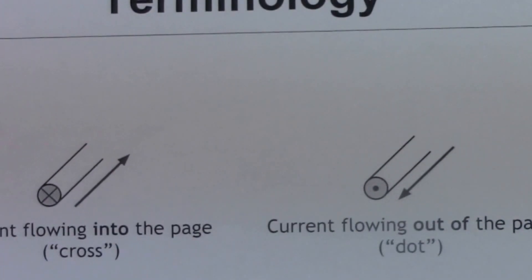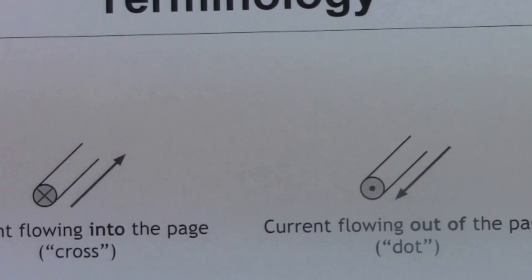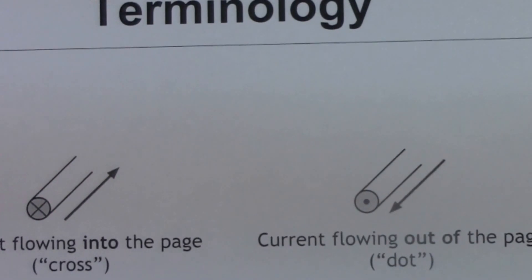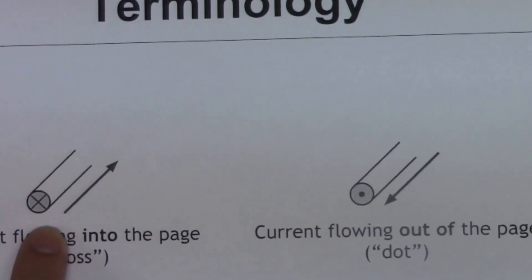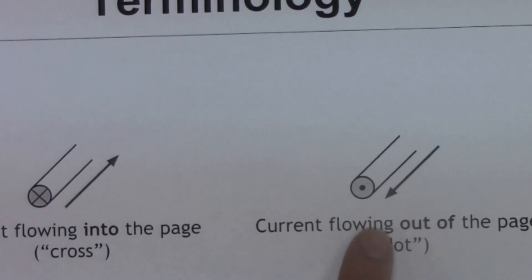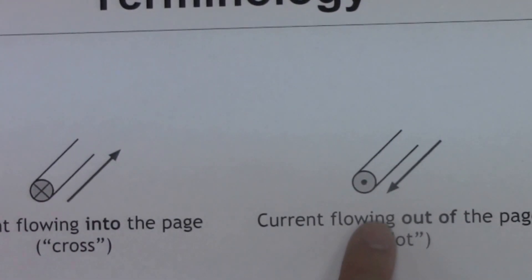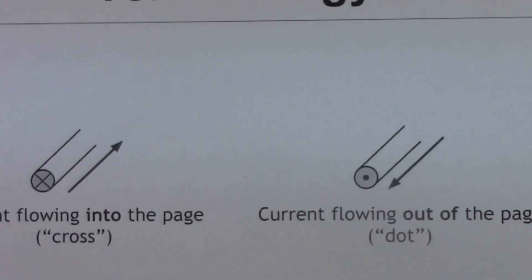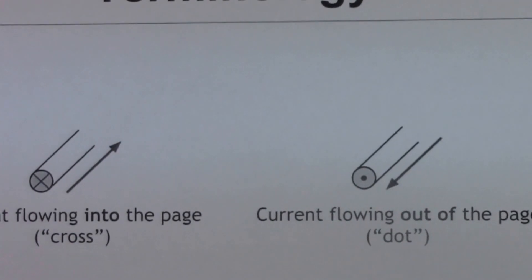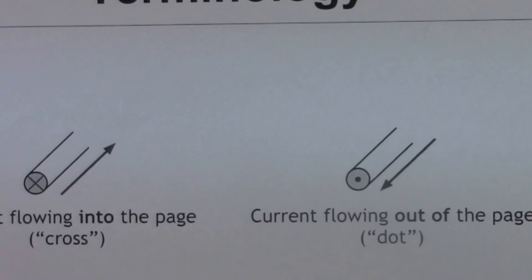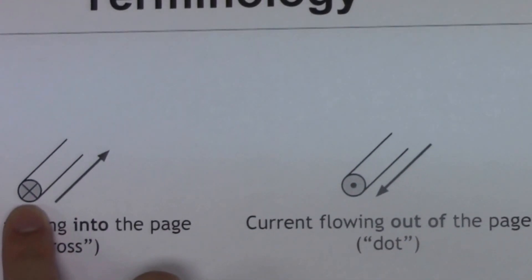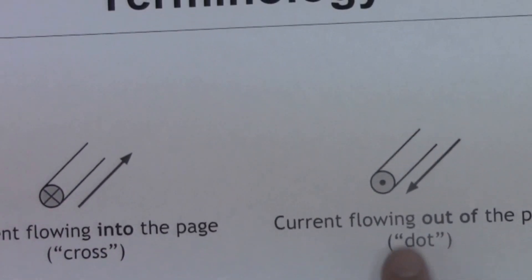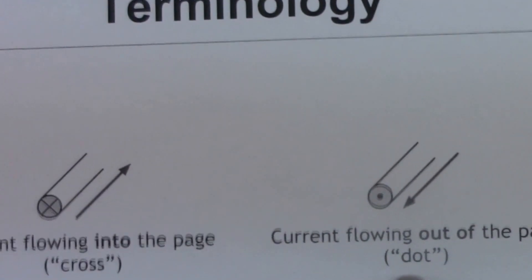For the second terminology, we will be using the cross-dot diagram to represent the direction of current flow. A cross indicates that the direction is going into the page, and a dot indicates that the direction is coming out of the page. We can use the analogy of an arrow to help us remember: if you see a cross, it represents the back of the arrow, meaning it is going into the page. If you see a dot, it represents the front of the arrow, meaning it is coming out of the page.